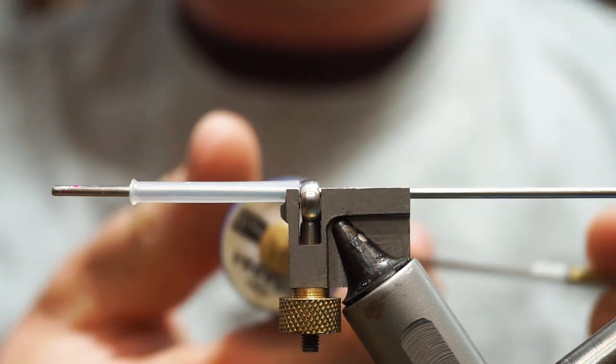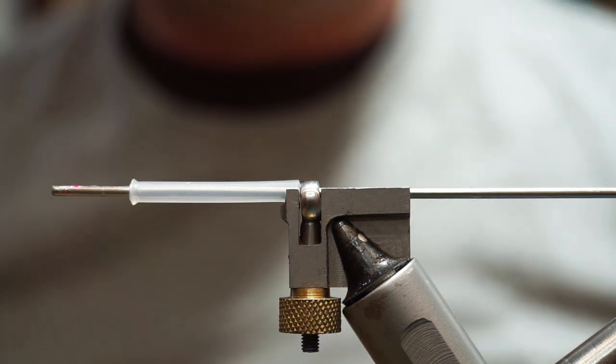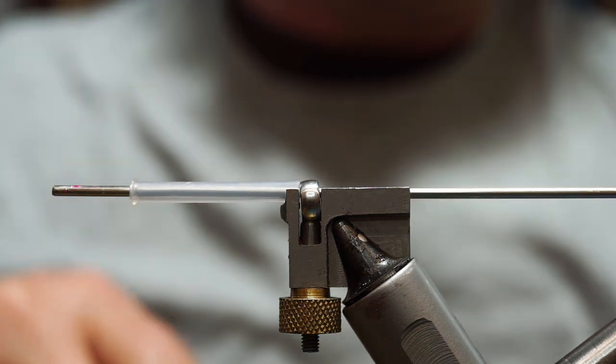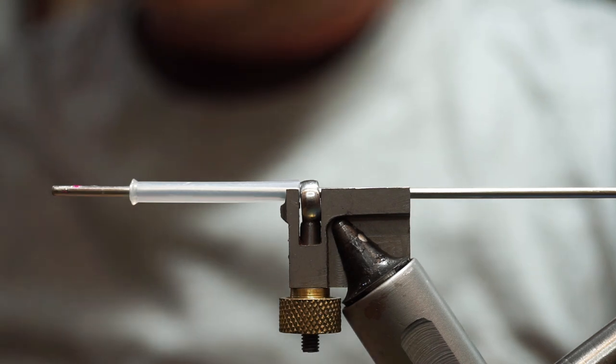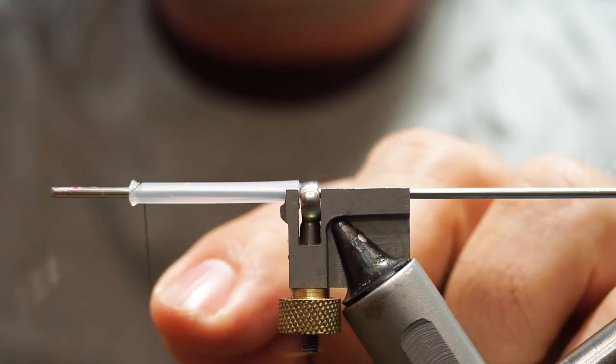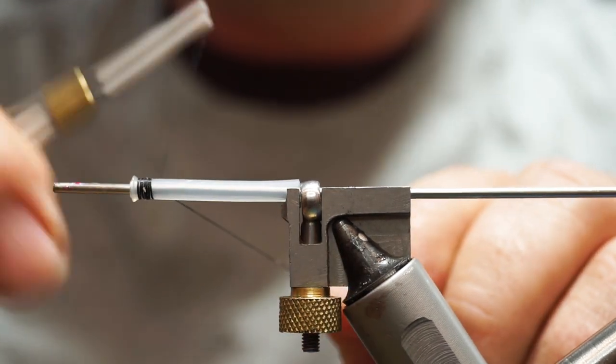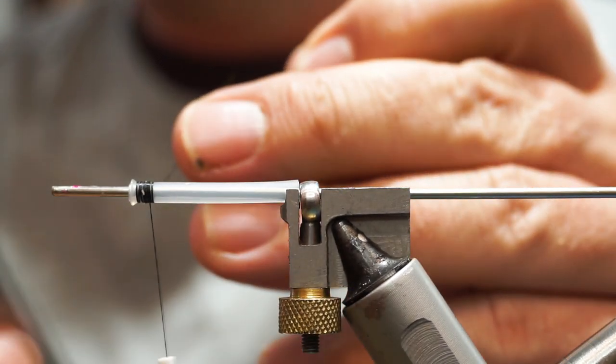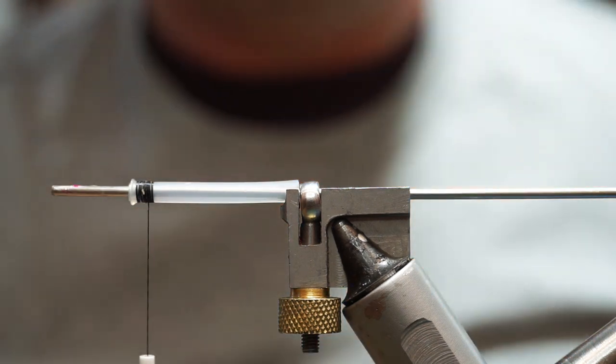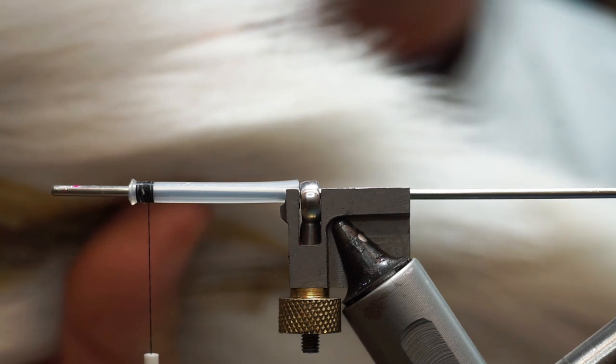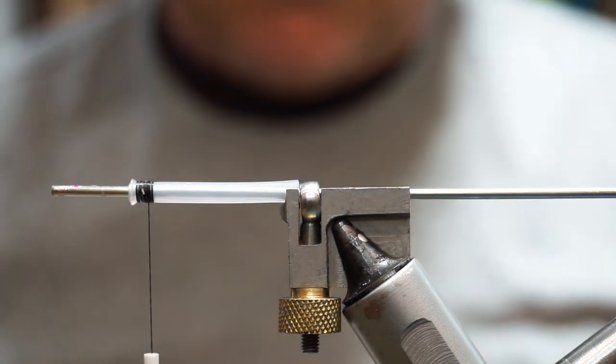I'm going to use an 8-0 black thread for this. I'm just going to wax the thread and we're essentially just tying it on at the head here. So, white bucktail.